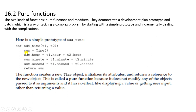The variable is named sum because that is the name assigned. Then t1.minute plus t2.minute gets stored inside sum.minute. Similarly, t1.second plus t2.second gets stored inside sum.second, and we return sum. The function creates a new Time object, initializes its attributes, and returns a reference to the new object. This is called a pure function because it does not modify any object passed to it as an argument.